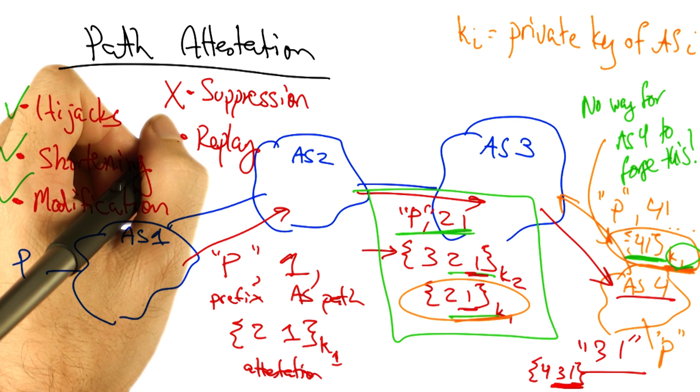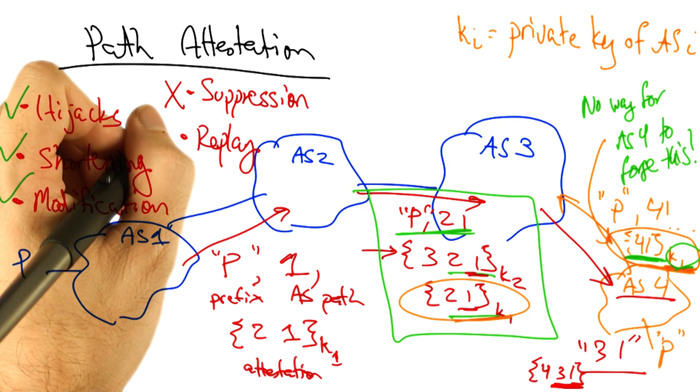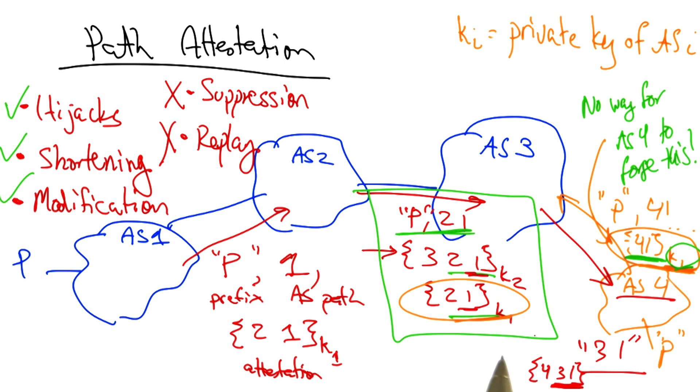Certain types of replay attacks, such as a premature re-advertisement of a withdrawn route, also cannot be defended against. And of course, there is no way to actually guarantee that the data traffic travels along the advertised AS path, which is a significant weakness of BGP that is yet to be solved by any routing protocol.